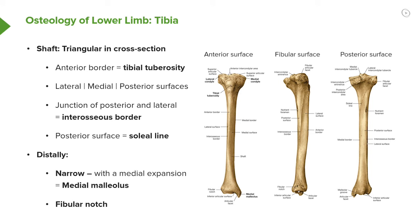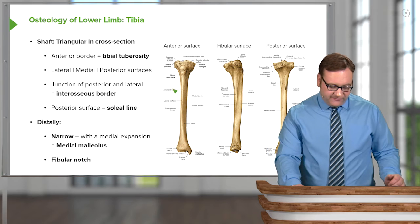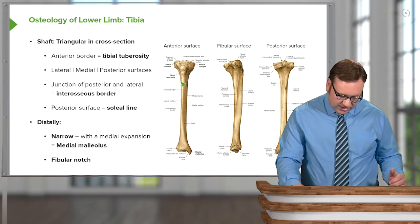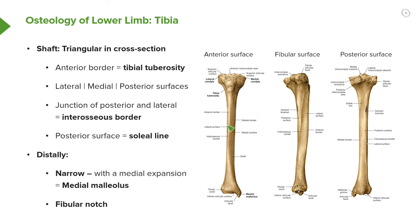The shaft of the tibia is triangular in cross section. On the anterior border we find the tibial tuberosity and then a rather sharp anterior edge. The lateral, medial, and posterior surfaces form this triangular shape in cross section. Here we have the medial surface running down towards the medial malleolus, and here we can see the lateral surface forming the sharp anterior border. In the fibular view we can see the lateral surface with the anterior edge and anterior border.